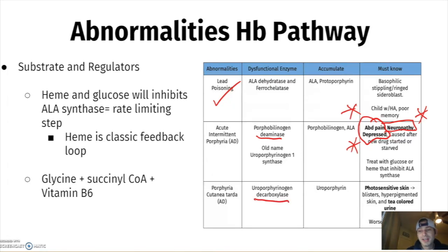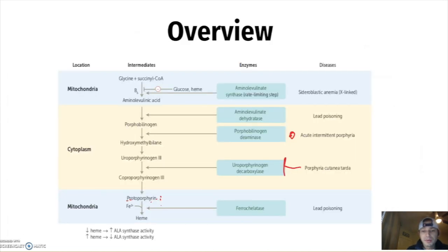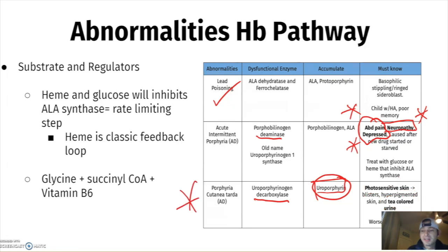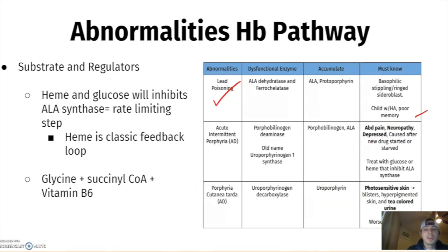Porphyria cutanea tarda involves the decarboxylase enzyme, so you accumulate uroporphyrin. The dead giveaways are photosensitive skin and tea-colored urine — those are bolded clues. When you go through a vignette, it's a series of sentences with strategic clues to guide you to your diagnosis.